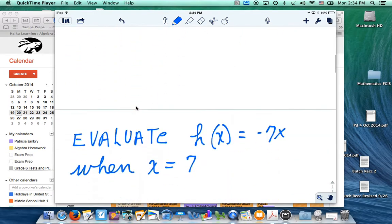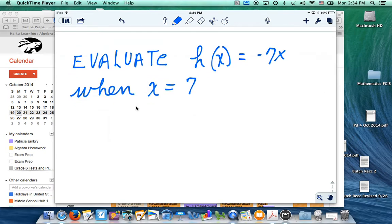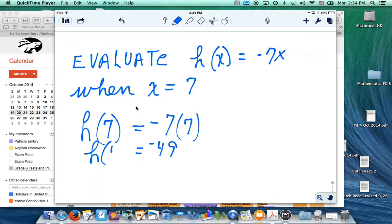Let's do one more problem. Evaluate h of x equals negative 7x when x equals 7. Do you know what to do? Take out the x, put in 7, and evaluate the equation. Negative 7 times 7, negative 49. So, h of 7 equals negative 49.